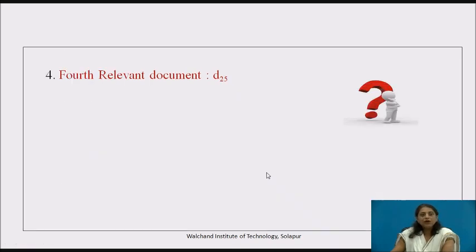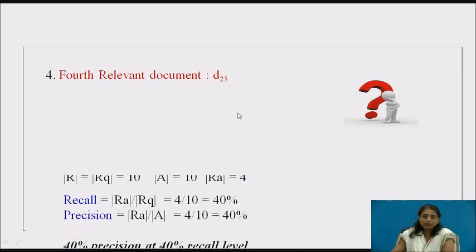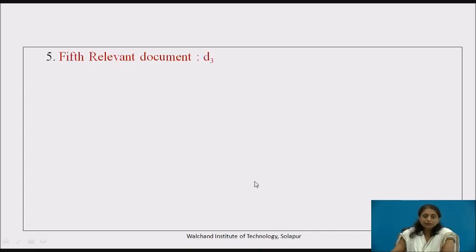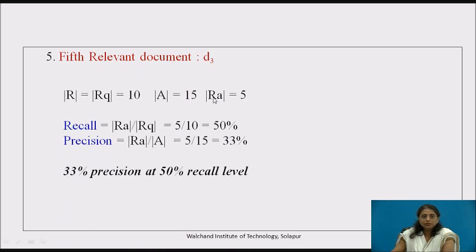Pause the video and find recall and precision for the fourth relevant document D25. The total number of documents in the answer set up to D25 is 10, and 4 are relevant. So recall = 4/10 = 40% and precision = 4/10 = 40% — that is 40% precision at 40% recall level. The fifth relevant document is D3; the answer set now has 15 documents with 5 relevant. Precision = 5/15 ≈ 33% at 50% recall level.